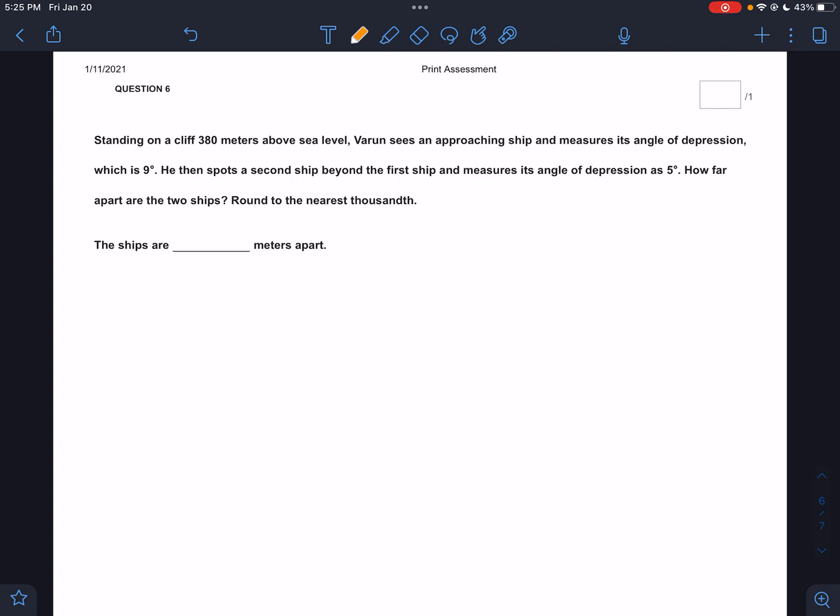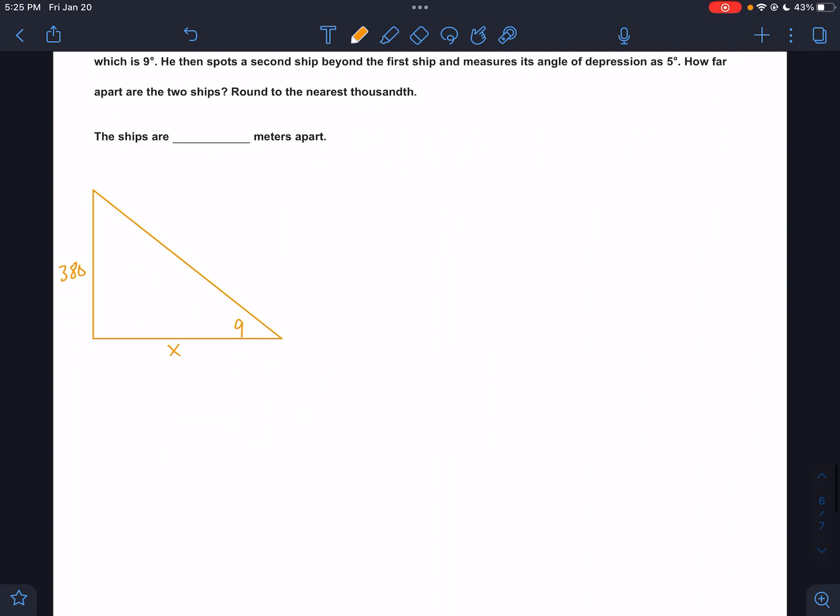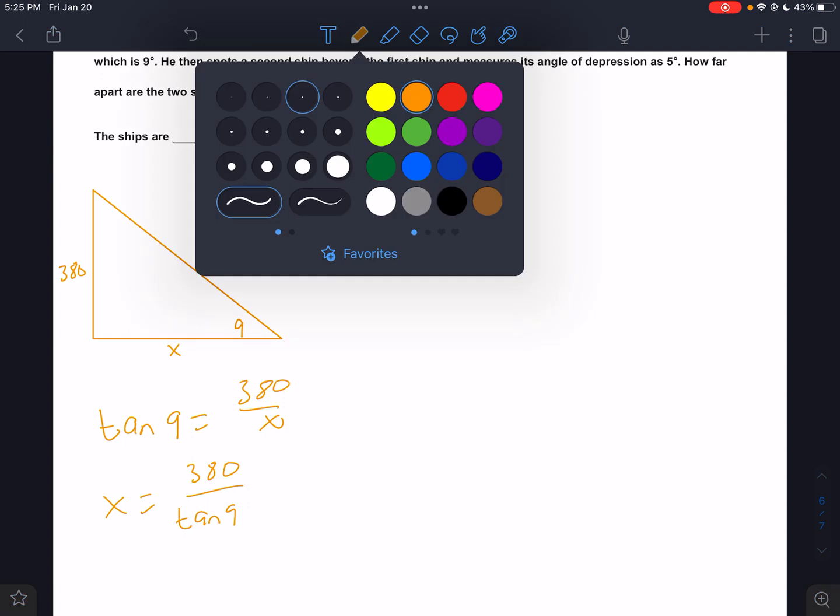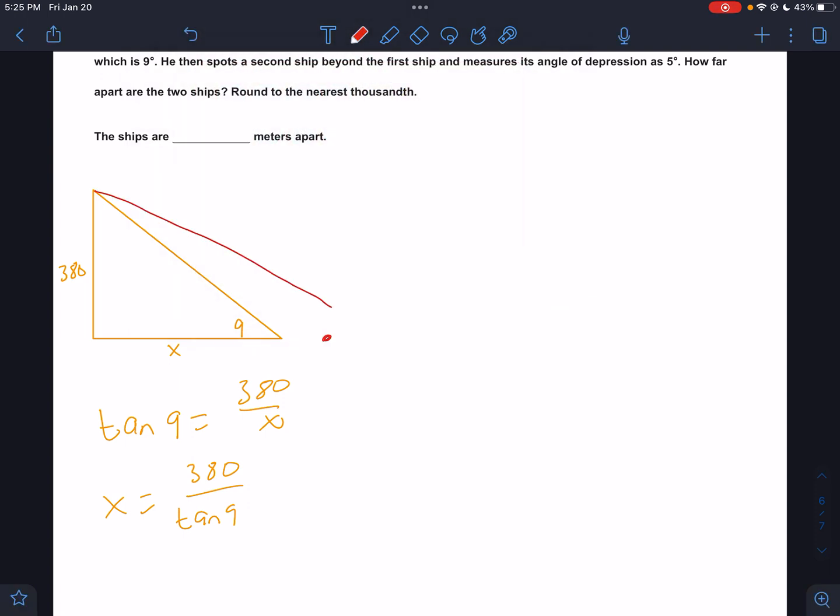Standing on a cliff 380 meters above sea level, Varun sees a ship and measures the angle of depression 9. Second ship, 5. How far apart? Same question we did a second ago. So go back to the other one if you want to kind of see a little bit, but I'm going to use elevation. So the closer ship is 9 degrees. I'm 380 meters above sea level, and I can find that distance. I'll call it x. So that would be the tangent of 9 equals 380 over x. So x equals 380 divided by the tangent of 9.